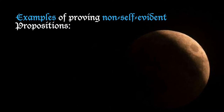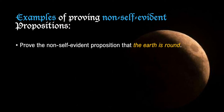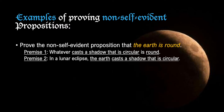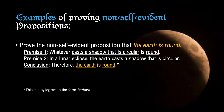A final example of proving a non-self-evident proposition, taken from astronomy: prove that 'the earth is round.' Premise 1 — whatever casts a shadow that is circular is round; Premise 2 — in a lunar eclipse, the earth casts a shadow that is circular; Conclusion — therefore, the earth is round. Again, the first two propositions are self-evident, whereas the conclusion is not self-evident. While standing here on earth we can't see that the earth is round, but from the two premises we can reason to that conclusion.